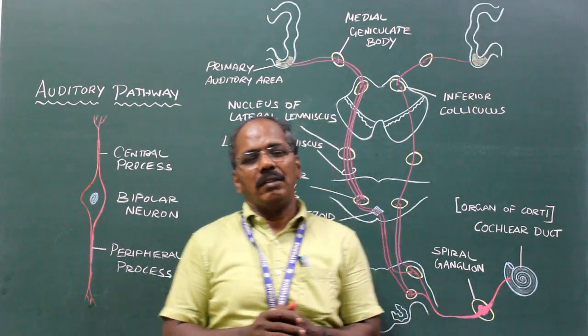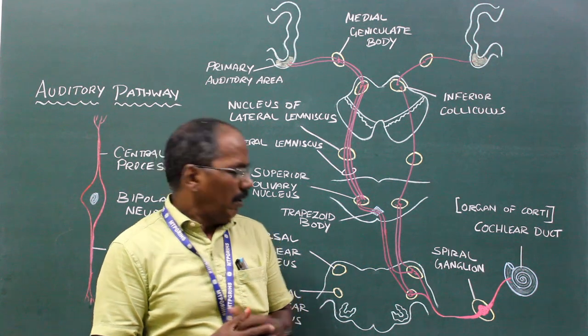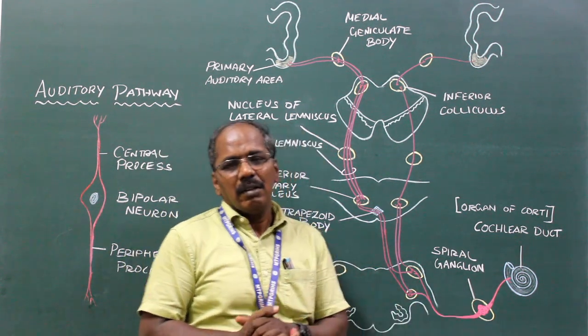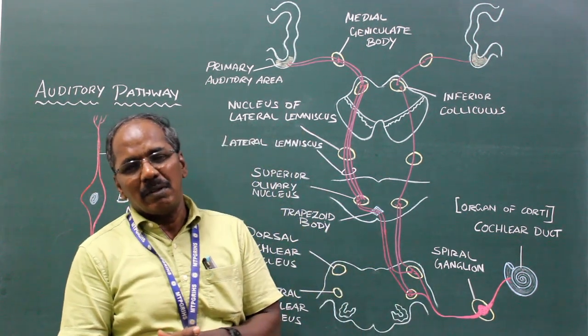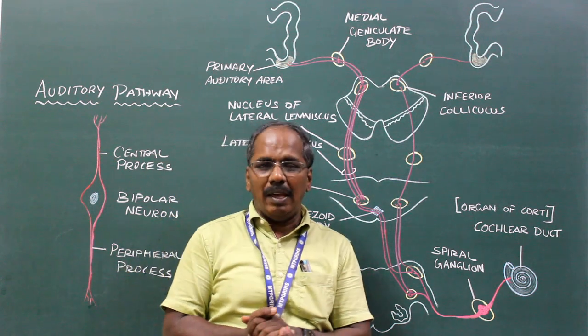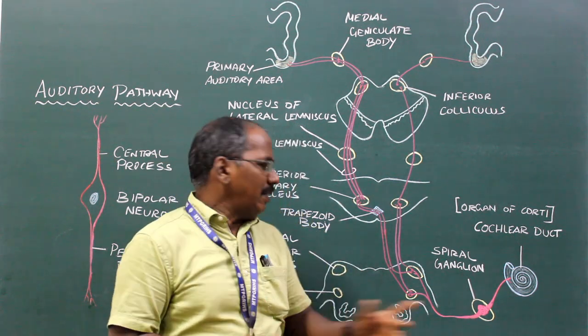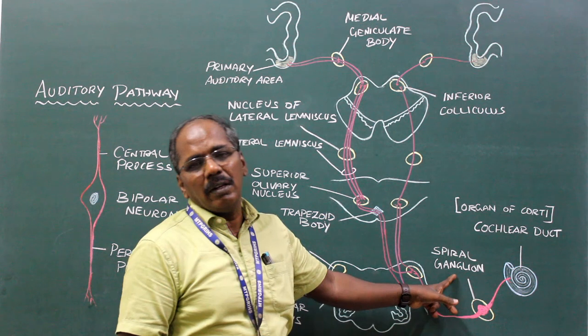Auditory Pathway. The cell bodies of the first order sensory neurons of the auditory pathway lie in the spiral or cochlear ganglion.